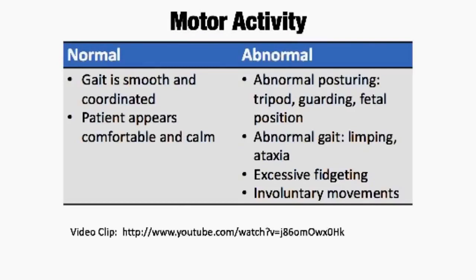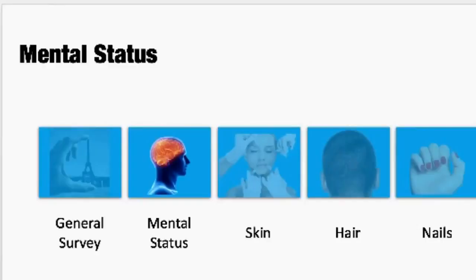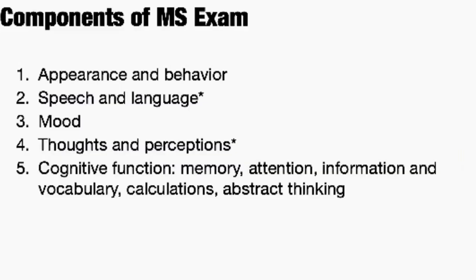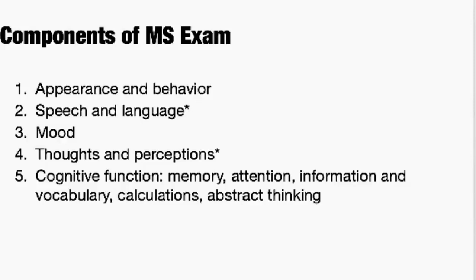Next, we're going to talk about mental status. The mental status really combines parts of the general survey, the neurologic, and the psychosocial assessment. When you're talking about mental status, you're really bringing all those different components together. We talked about appearance and behavior, speech and language, mood, thoughts, perceptions, and cognitive function.